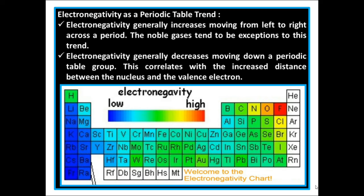Therefore, fluorine has a higher electronegativity value and caesium has a lower electronegativity value.